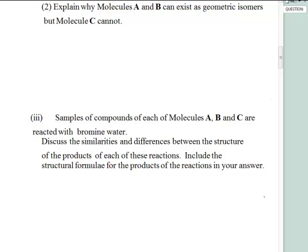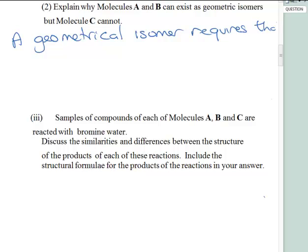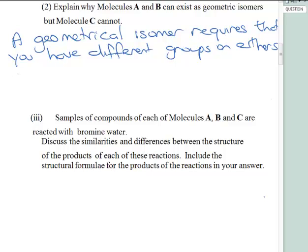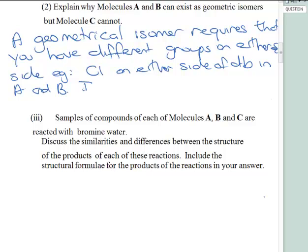The next question: geometrical isomers why is it the A and B can exist in them but C cannot? Now a geometrical isomer requires that you have the groups being different on either side of the double bond not on the same side. So geometrical isomer requires that you have and you should refer to the example of course. Chlorine on either side of double bond and A and B it cannot be on the same side as in the case of C.